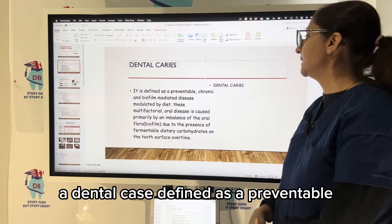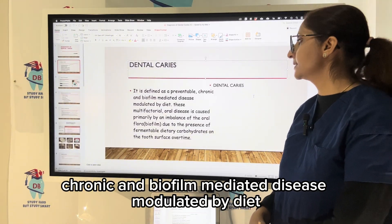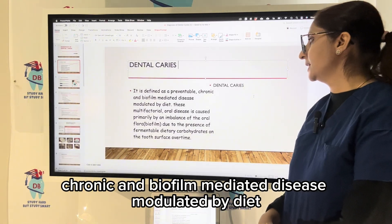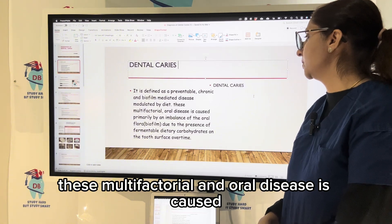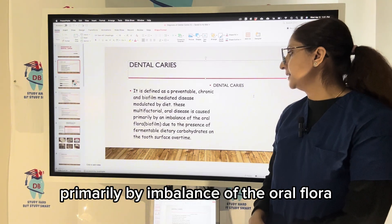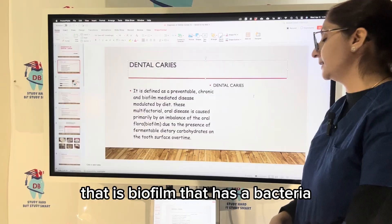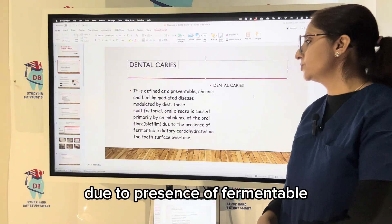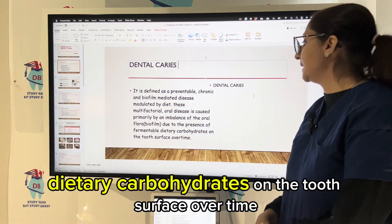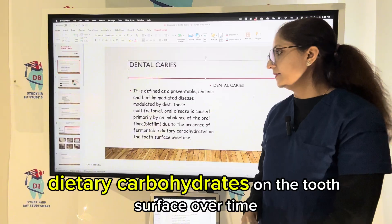dental caries are defined as a preventable, chronic, and biofilm-mediated disease, modulated by diet. These multifactorial oral diseases are caused primarily by imbalance of the oral flora — that is biofilm — which has bacteria due to the presence of fermentable dietary carbohydrates on the tooth surface over time.